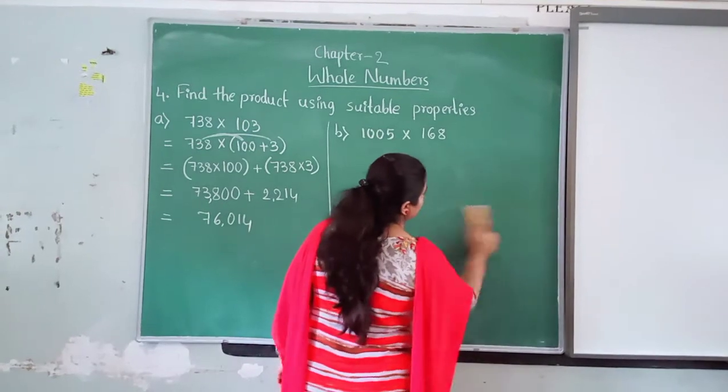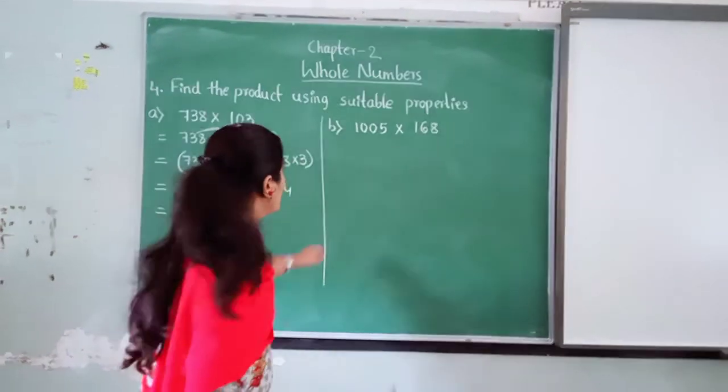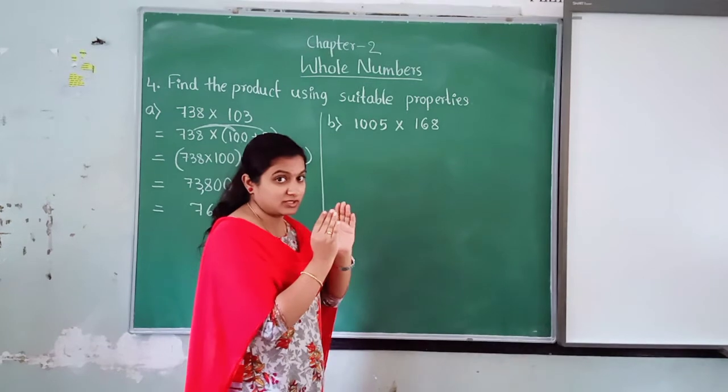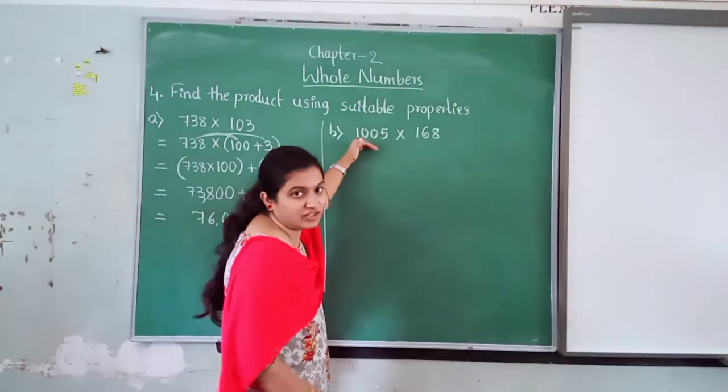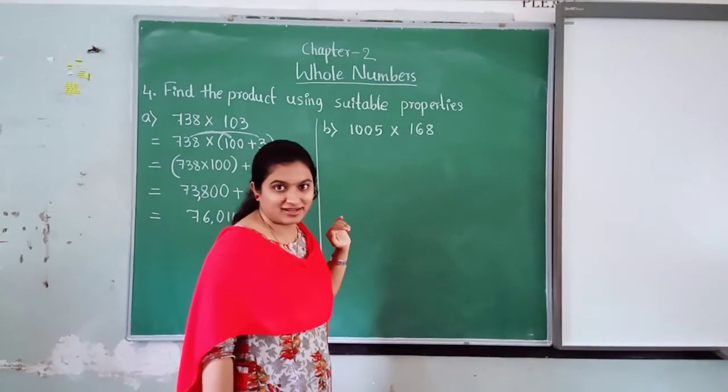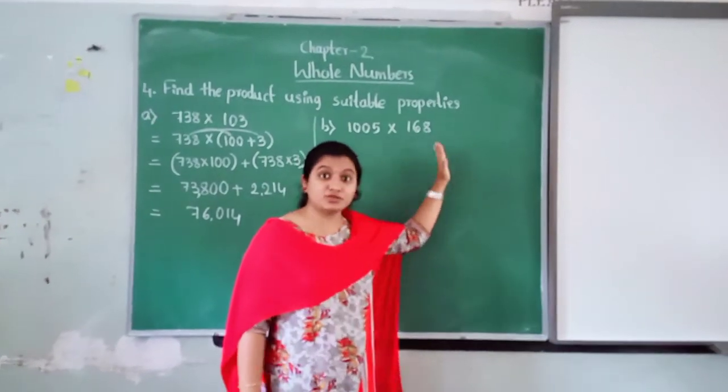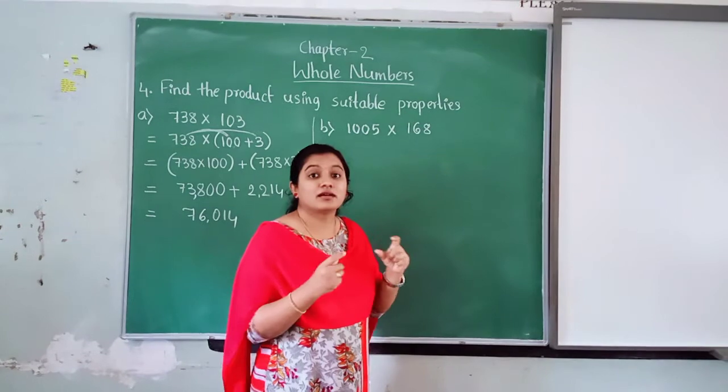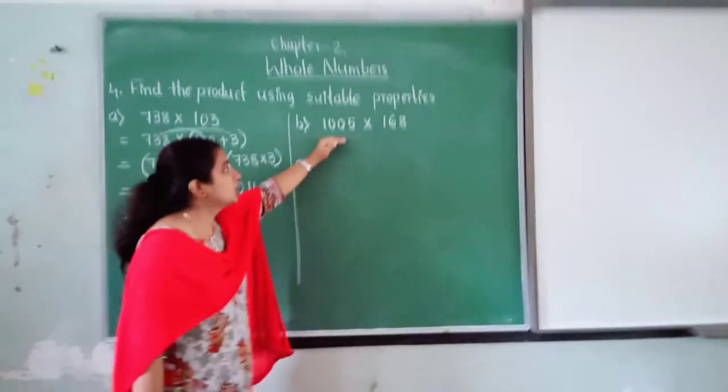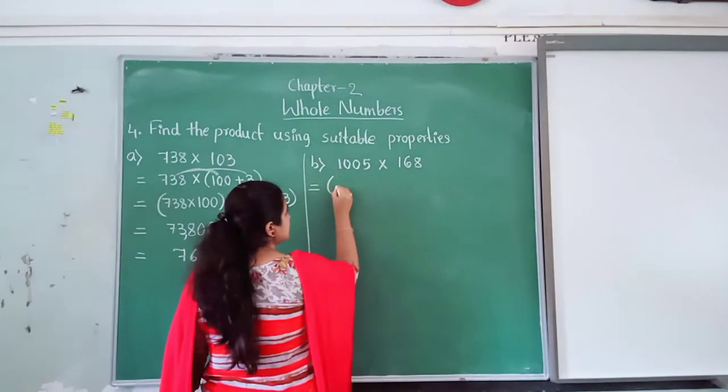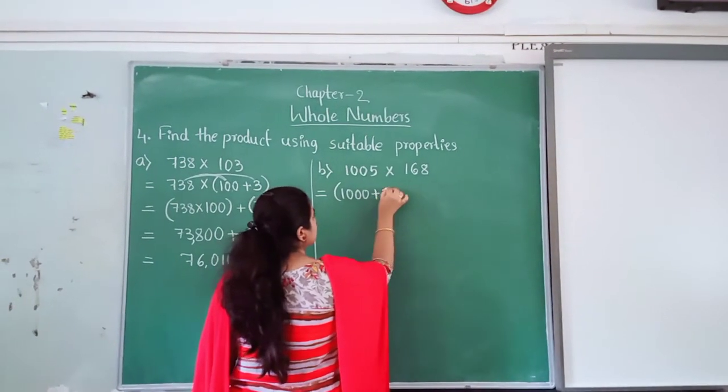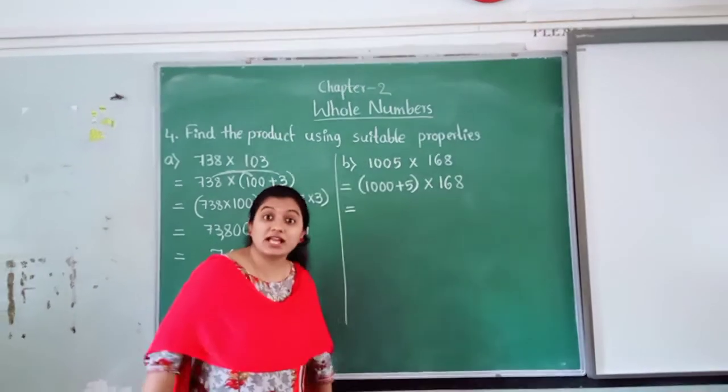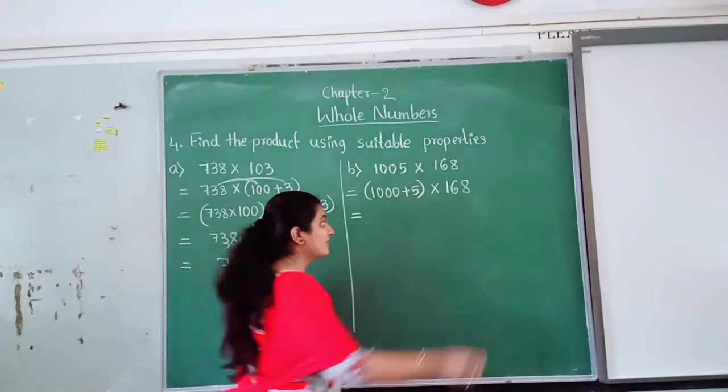Now, here, one more question is there. Look at the board. 1,005 into 168. Which one you will make group? 1,005 - 1,000 plus 5. Understood? You cannot make a group 1,005 and 168. There is a big gap. So, don't do that. Here, you have to make a group. 1,000 is equal to, it's compulsory. 1,000 plus 5. Into 168 as it is. Now, who is outside? 168 is outside.